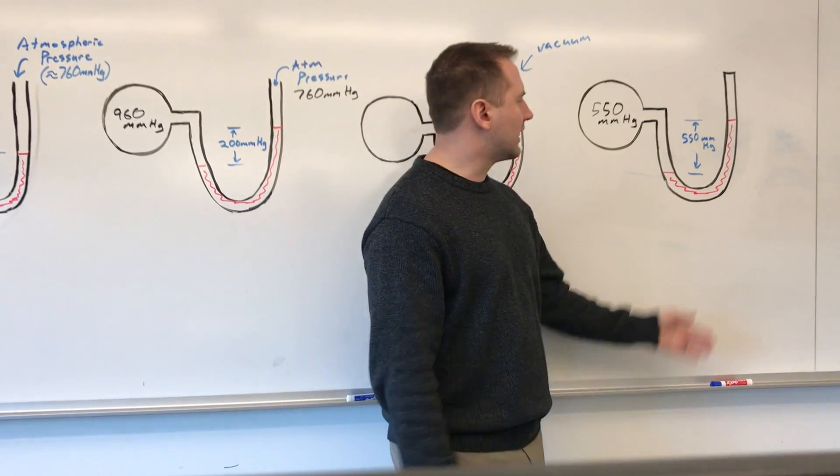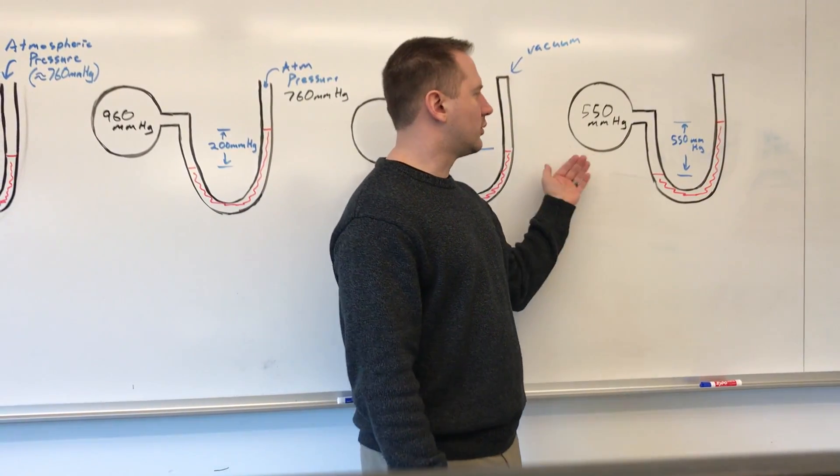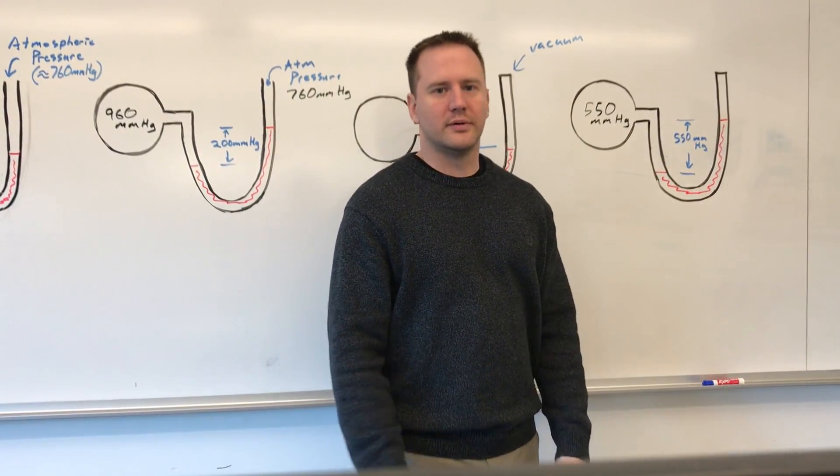Essentially what we're looking at is the gravitational force of mercury that's being overcome, and that's going to be equivalent to the excess pressure exerted on the other side or going the other way.